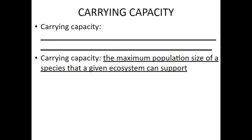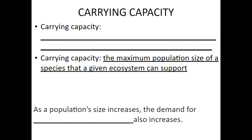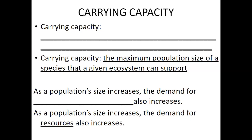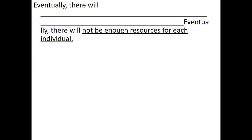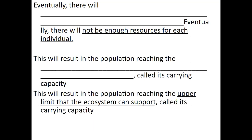As population size increases, the demand for resources also increases. If that population keeps growing, eventually there will not be enough resources for each individual to survive. If you surpass that limit, you've past the carrying capacity. The number at which they can survive and stay stable is the carrying capacity — the upper limit that an ecosystem can support.